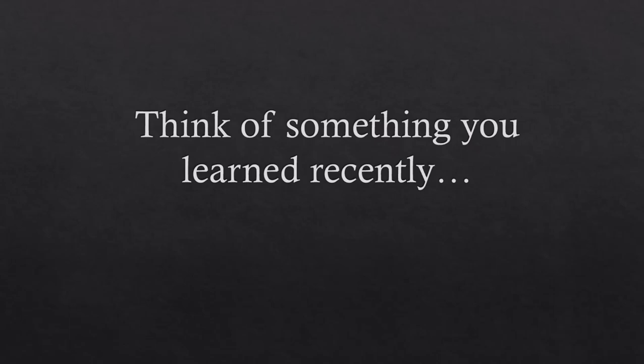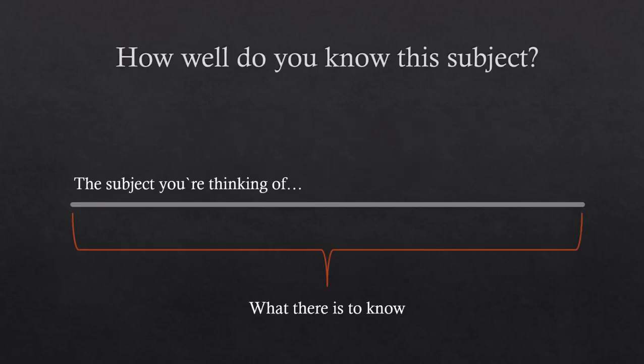Now, after you watch your video, after you sat in class, whatever, after you're learning, ask yourself, how well do I know this subject? So think of that subject, think of what you learned. And you know that there is a beginning to that learning and to what you need to know about the subject, and then there's an end to it. So it starts somewhere and it ends somewhere else. It doesn't mean you know everything about it, it just means that your learning has a beginning, and then there's a limit to the amount of things you know, so there's an end to that. So that's what I mean by what there is to know.